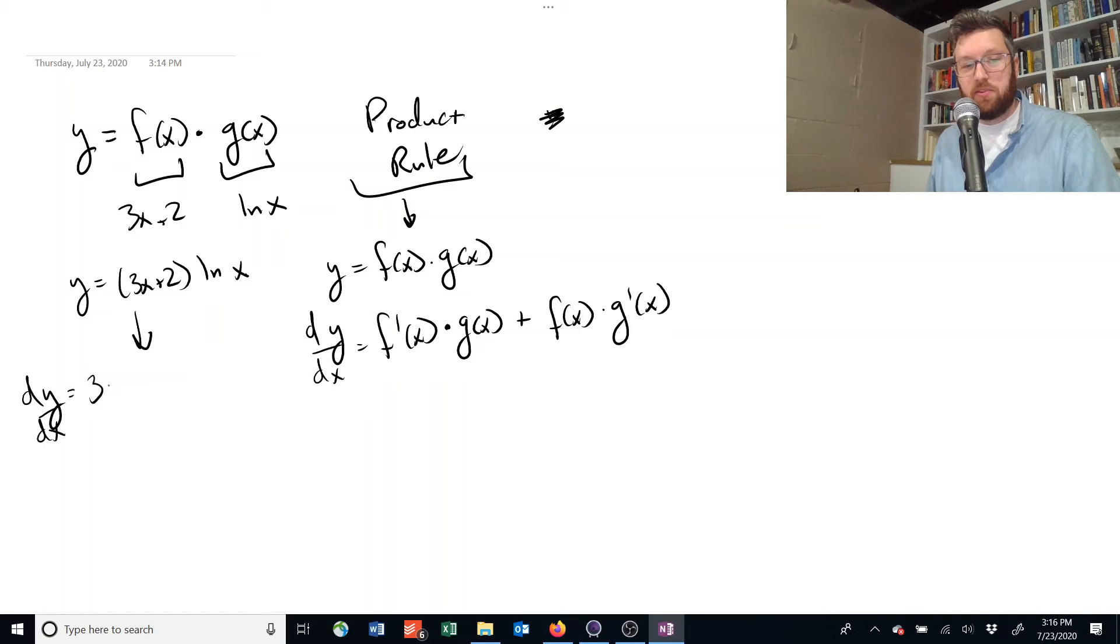and we have 3 multiplied by x raised to the power of 1, but we subtract 1, and that is equal to 0. And so all those things just disappear. Then we have to multiply it by g of x, which is the natural log of x, so we'll just leave that there.